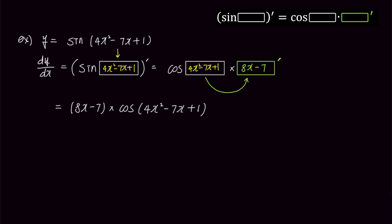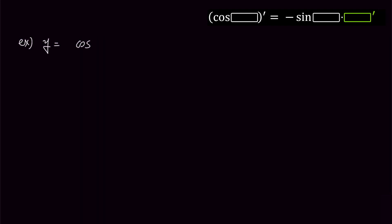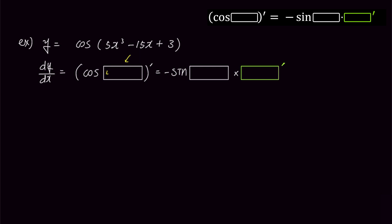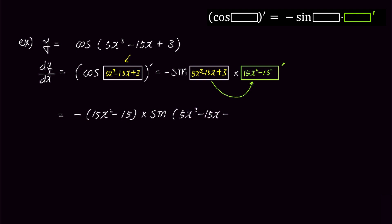Now let's solve an example involving cosine. Our second example is y equals cosine of 5x cubed minus 15x plus 3. To find dy/dx, let's use the formula shown above and compare it with the problem. We can see that we need to put 5x cubed minus 15x plus 3 into the cosine box, and similarly put it into the right box with the negative sign. The last step is to find the box prime — the derivative of 5x cubed minus 15x plus 3 is 15x squared minus 15 — and place it into the green box prime. Simplifying, the answer is negative 15x squared minus 15 times sine of 5x cubed minus 15x plus 3.